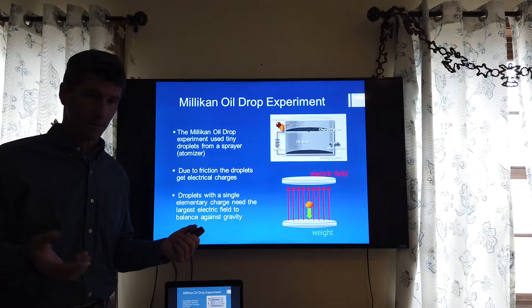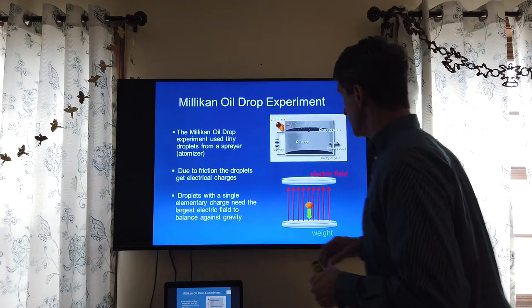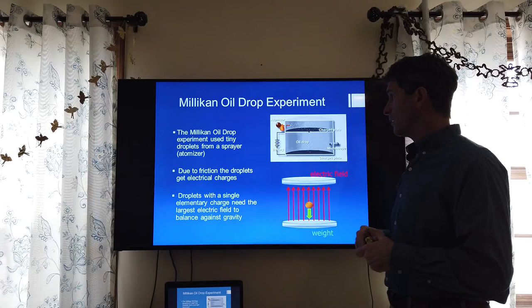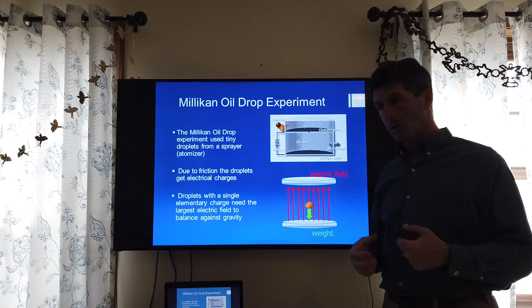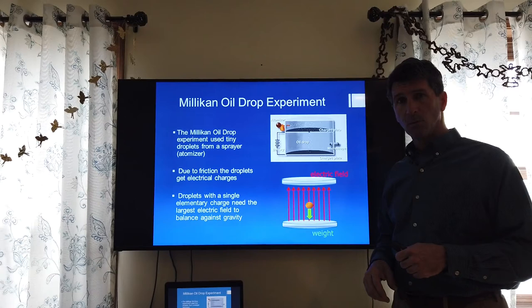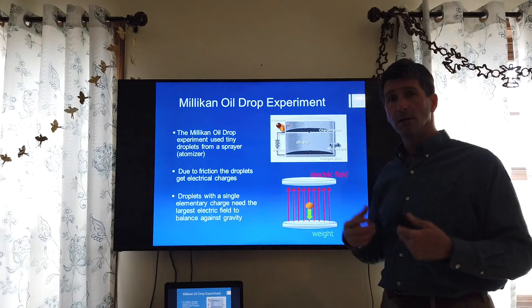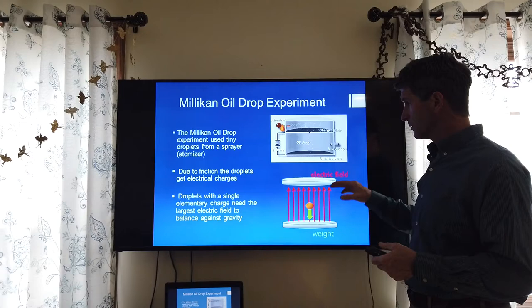As we said before, when you rub different objects together with different triboelectric constants, one is going to get a positive charge and one a negative charge. That's the case with the droplets as they're sprayed out — they gain a charge. Because the droplets are very small, some will only get a single quantized charge. What Milliken found was that the electric field needed to suspend these charged droplets was quantized — some droplets would need a very strong field, some a weaker field, but the electric field went in discrete steps.